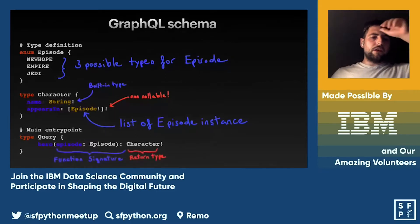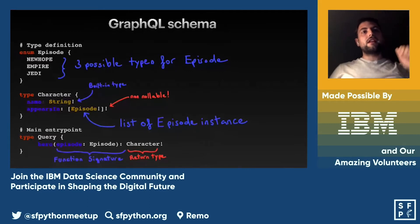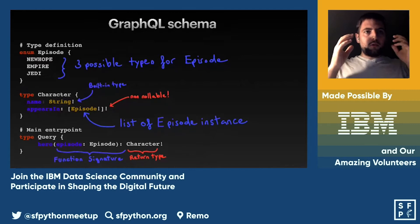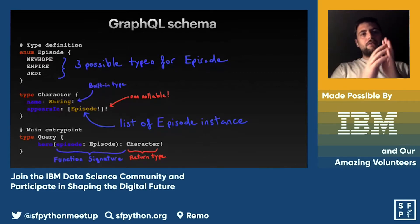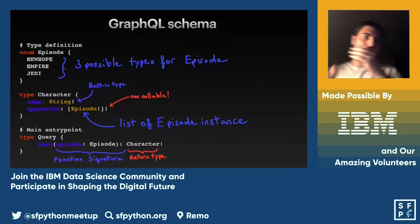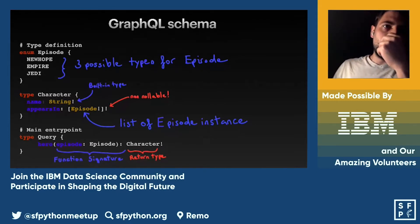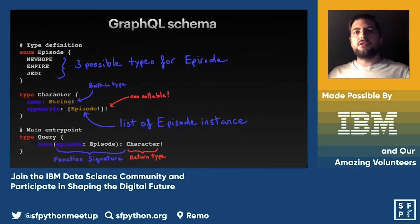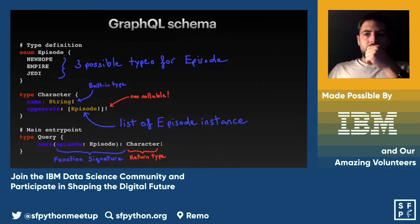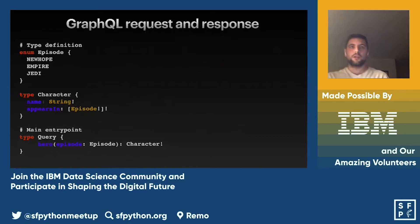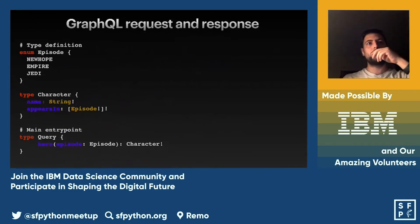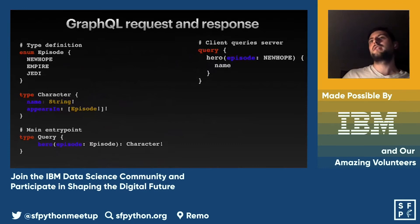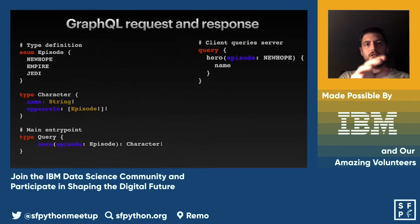Every GraphQL application has a main entry point — think of this as your root query handler. The Query type is different from the Character type because it defines the entry point to your application. In this case there's one handler called 'hero' that accepts an object and returns a Character type. When we make a query, we call the hero function, and since it returns a Character, we extract the name from that character.